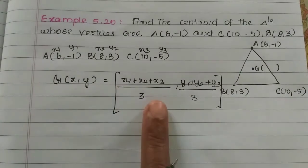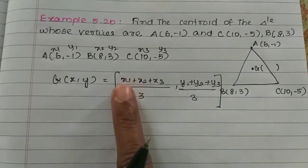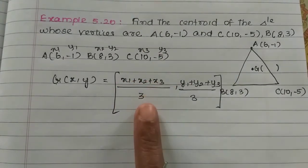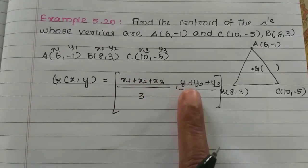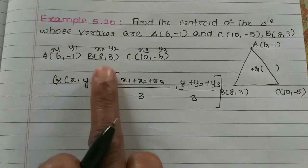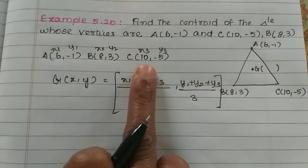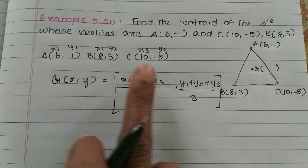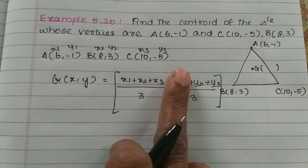Using the formula, G has coordinates: x = (x1 + x2 + x3) / 3 and y = (y1 + y2 + y3) / 3. The vertices are (x1, y1), (x2, y2), and (x3, y3).